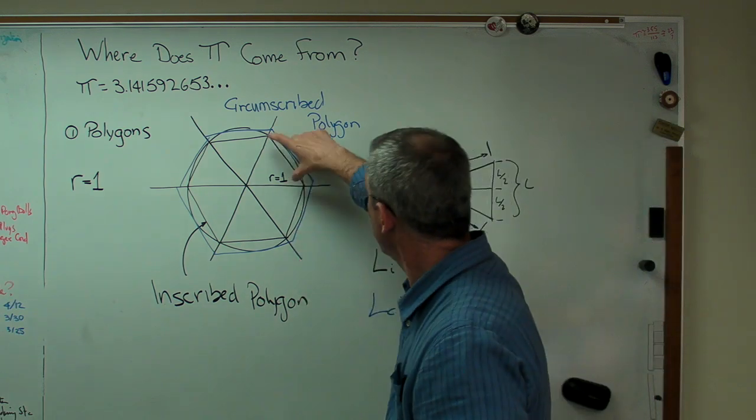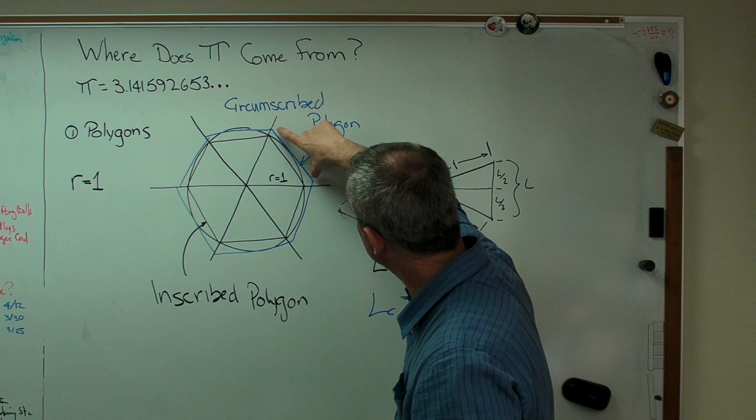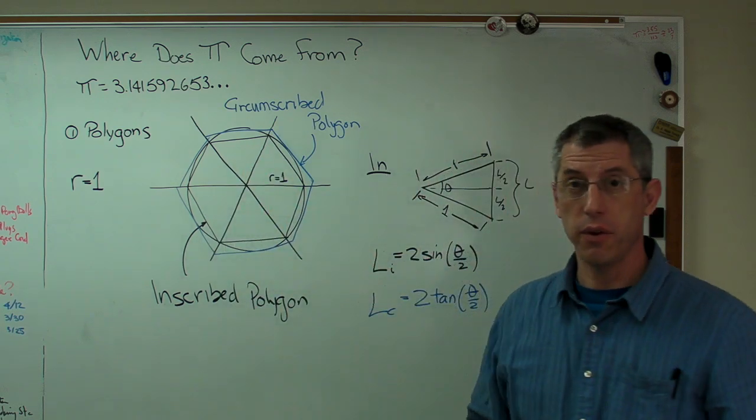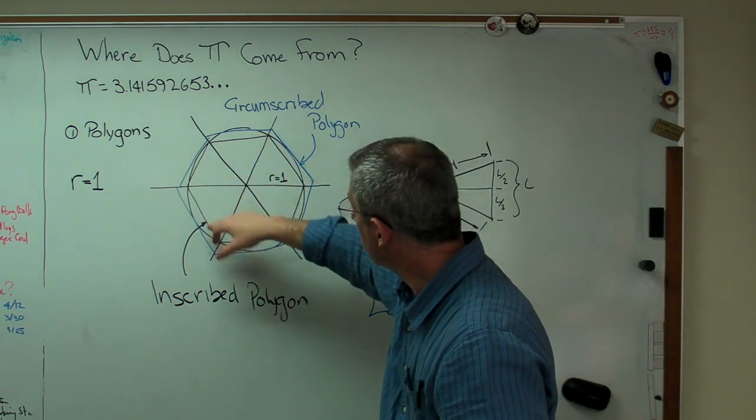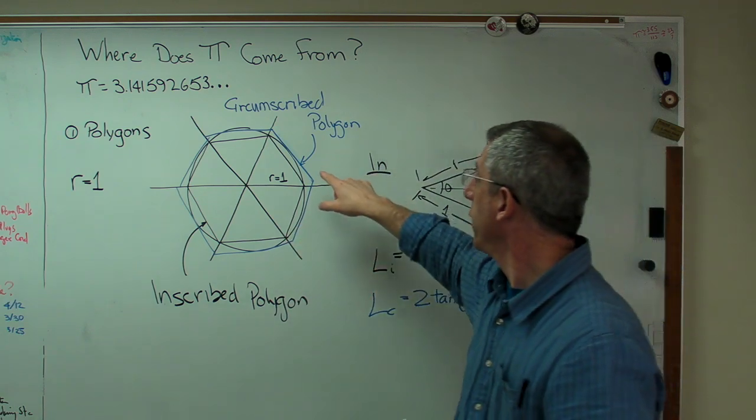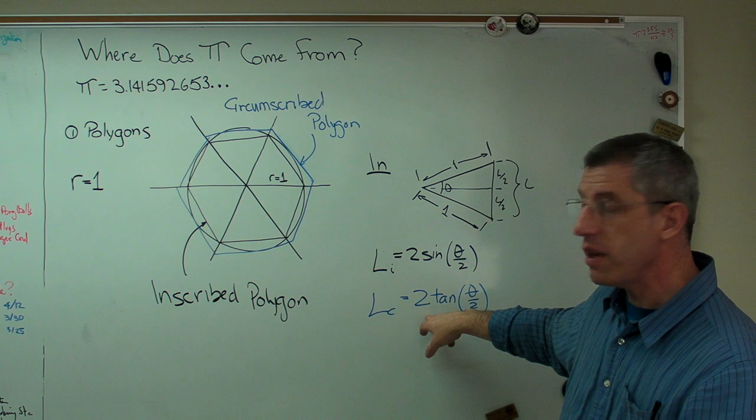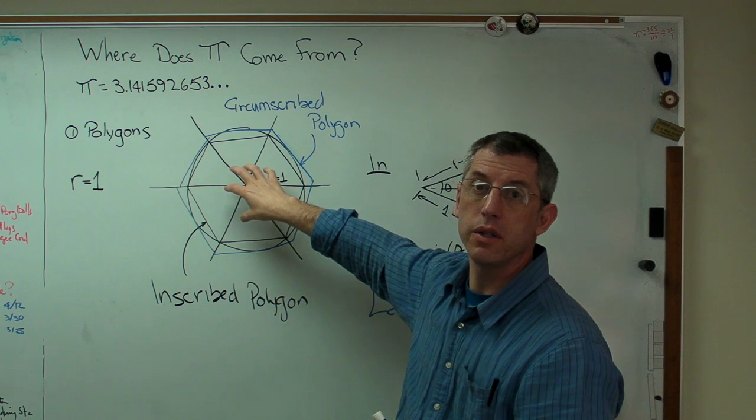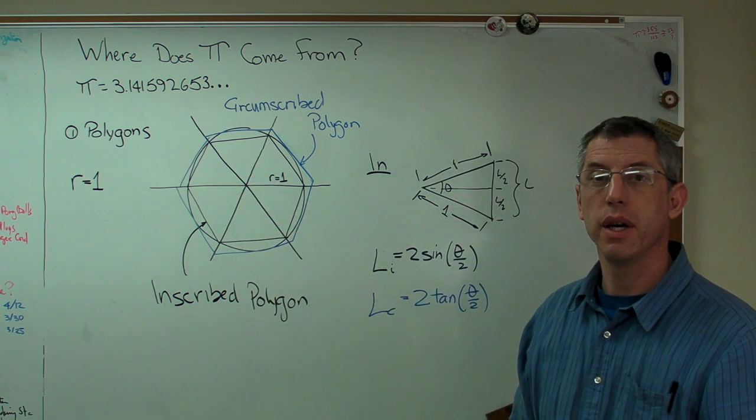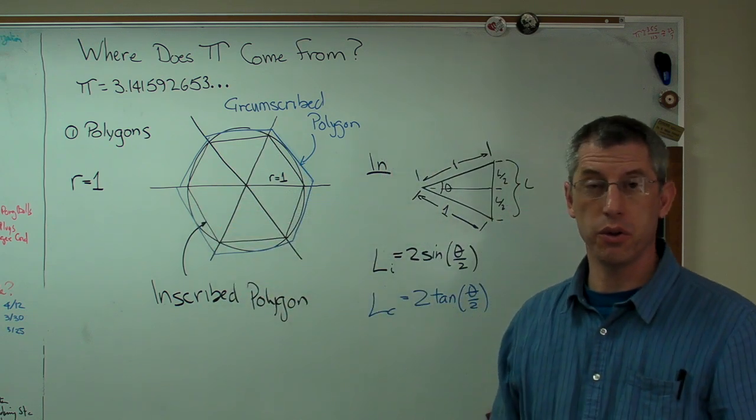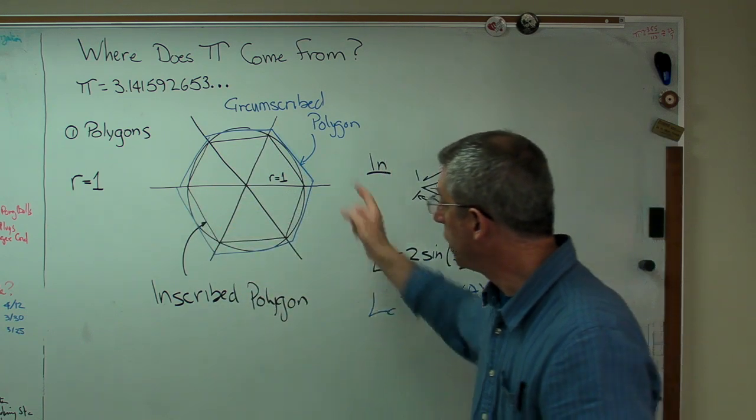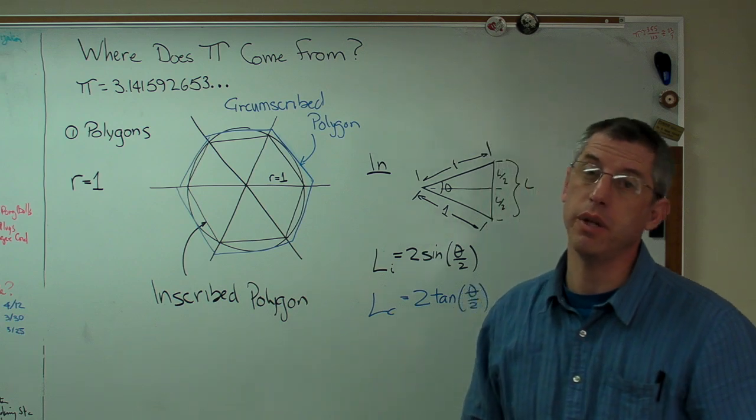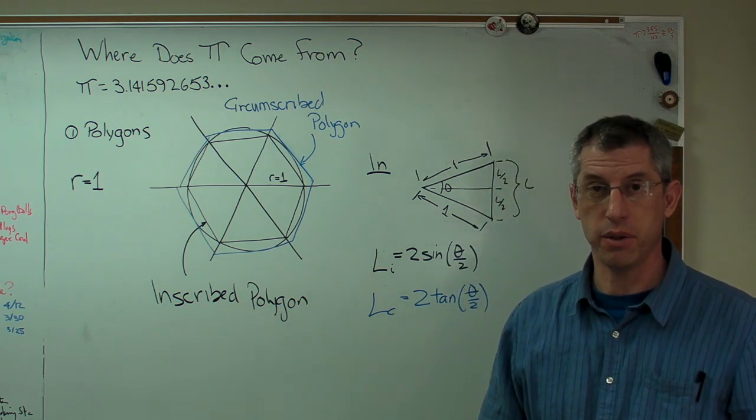So now we know how to add what the length of that segment is there and that segment. Well, you don't have to be too bright to figure out that if I've got 1, 2, 3, 4, 5, 6 segments, that for this case, the length of the inscribed polygon is 6 times L, and the length of the circumscribed polygon is 6 times this L. Well, as I've used more and more and more of these inscribed polygons and circumscribed polygons, those two lengths correspond close, more and more closely to the circumference of this circle. Now, I know the radius is 1. That means the diameter is 2. That means the circumference is pi times the diameter, 2 pi.